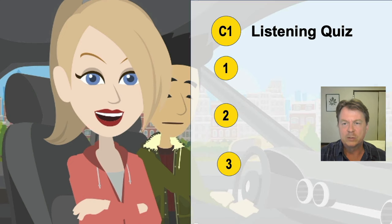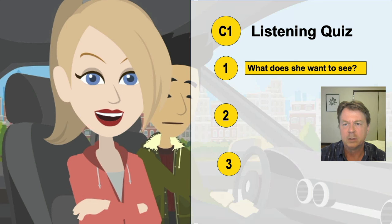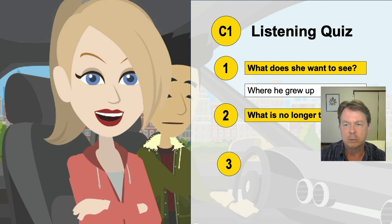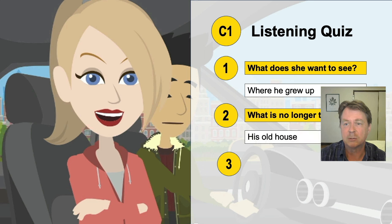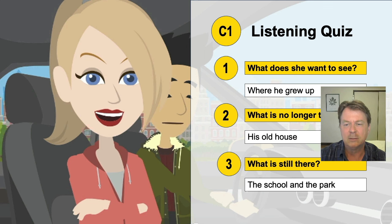Welcome back. So could you hear the answers to the questions? Let's go over these. Question one: what does the woman want to see? The answer is his old house or where he grew up. And question two: what is no longer there? The answer is his house — his house is no longer there. And question number three: what is still there? And he said the school that he attended and the park where he used to hang out.